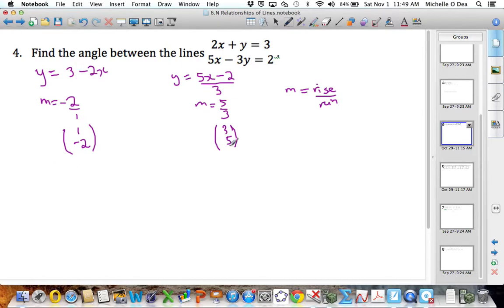Now that we have two direction vectors for these lines, we can substitute into the formula. So cos theta equals a dot b over the magnitude of a multiplied by the magnitude of b. Substituting in, remember the dot product is the product of the x components plus the product of the vertical components, so we'll have 1 times 3 minus 2 times 5, because the 2 is negative.